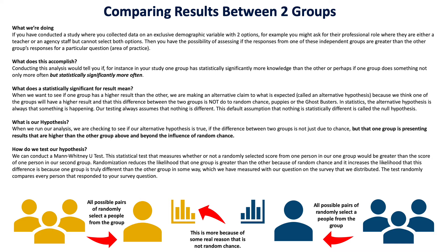In statistics, the alternative hypothesis is always something that is happening. Our testing always assumes that nothing is different — this is our default assumption, called the null hypothesis. Statistically significant means we're going to reject that notion. The test we're going to use always assumes that nothing is different between the two groups we're comparing. Our goal is to run this test and say there is a difference, and that difference meets a particular threshold.